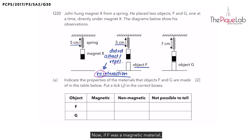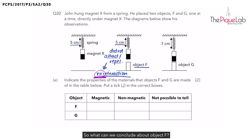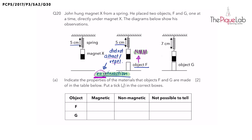Could F be a magnetic material? If F was a magnetic material, it would have been attracted to Magnet X, causing Magnet X to move towards it. But that did not happen — there was no interaction at all. So what can we conclude? Object F has to be a non-magnetic material. When an object does not have any interaction with a magnet, we can conclude that the object is a non-magnetic material.